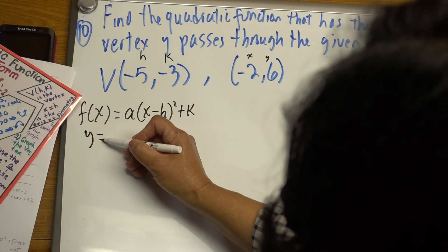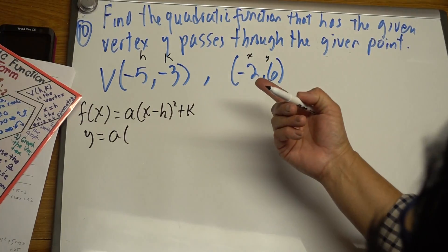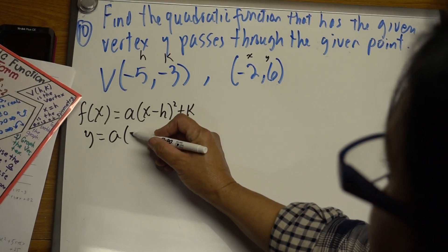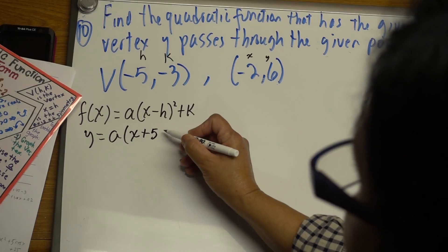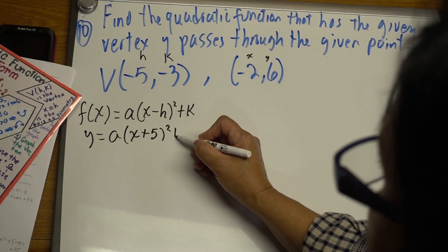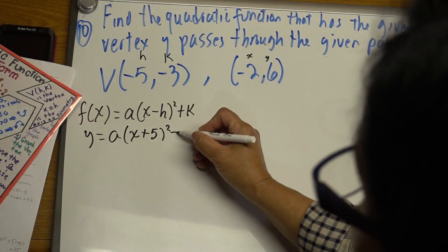Y equals a. We don't know a. Only h and k were given. So x, remember, plus 5 squared plus—I'm sorry—minus 3. Minus 3 is the k. It goes with the sign.